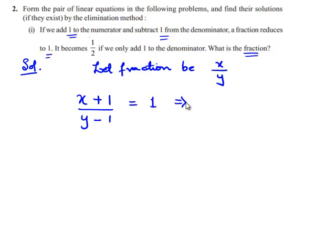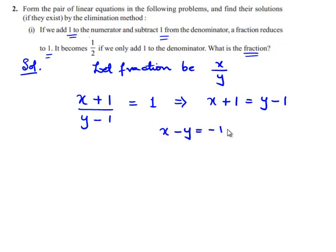By cross multiplication, we get x plus 1 is equal to y minus 1. On rearranging the terms, we get x minus y is equal to minus 1 minus 1, which is x minus y is equal to minus 2. Name this equation as equation number 1.